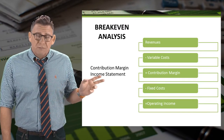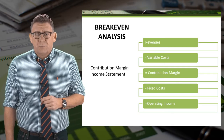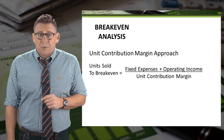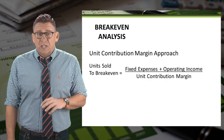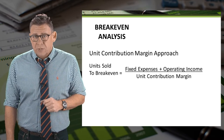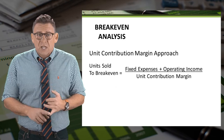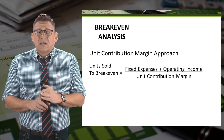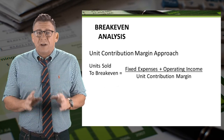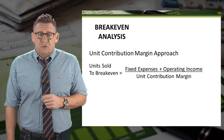Here is an example of the contribution margin income statement. The shortcut formula to calculate the units sold to break even is: fixed costs plus target operating income, divided by unit contribution margin.